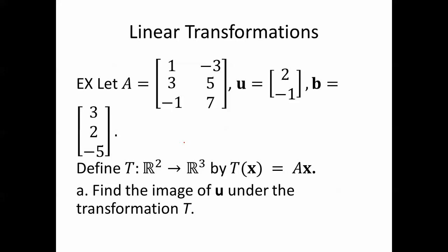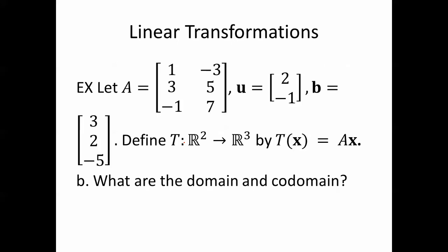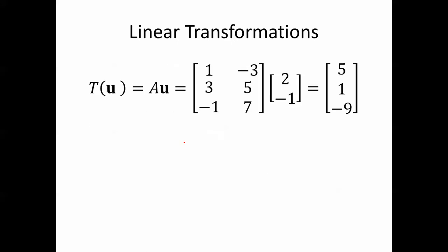Find the image of u under the transformation T. T(u) is A times u, so it'll be [1, -3; 3, 5; -1, 7] times [2, -1]. That's [5, 1, -9]. So that's the answer. That's the image.